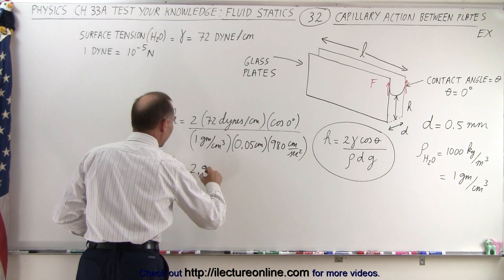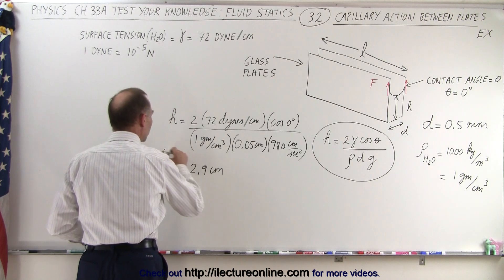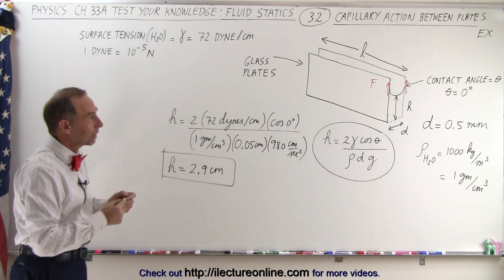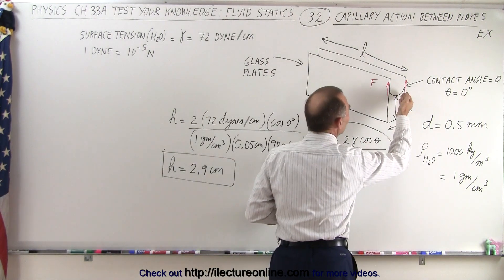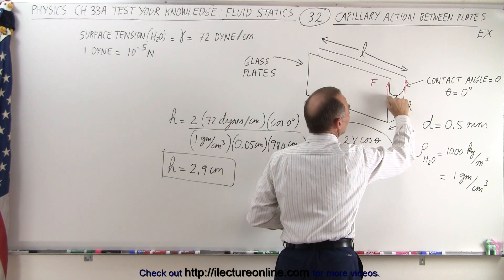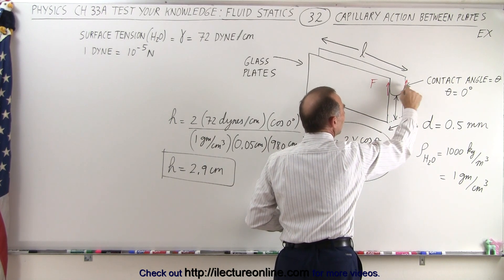So 2.9 centimeters will be the height that the water is drawn up between the plates. Now typically we have these little fillets on the side and we typically think the height is simply to the bottom of the fillet, not to the very top where it's wetted.